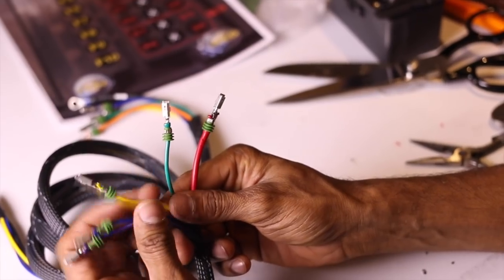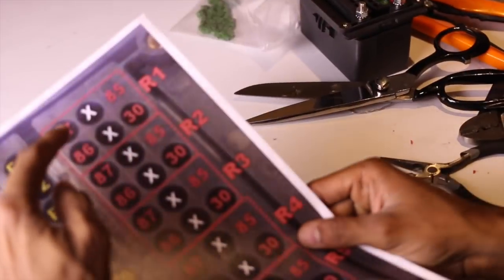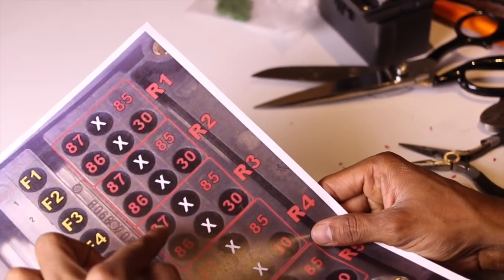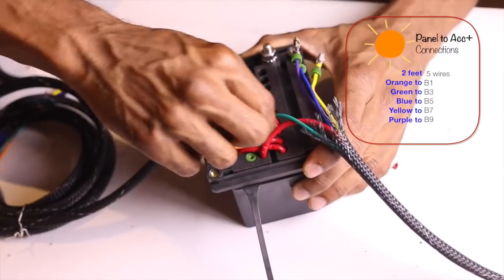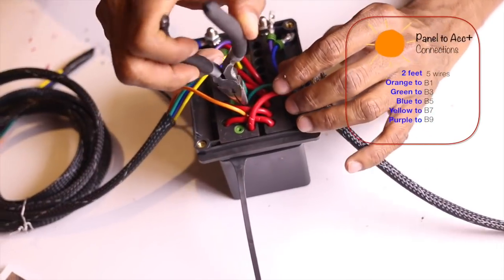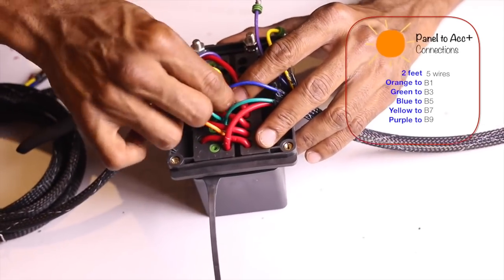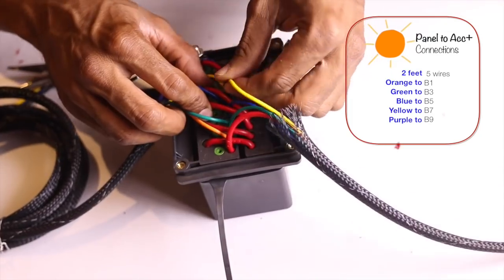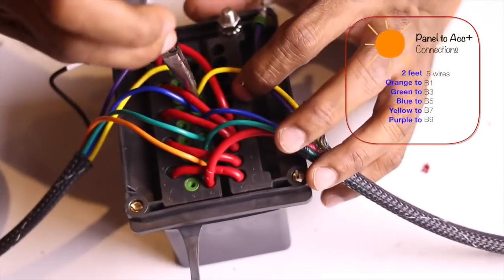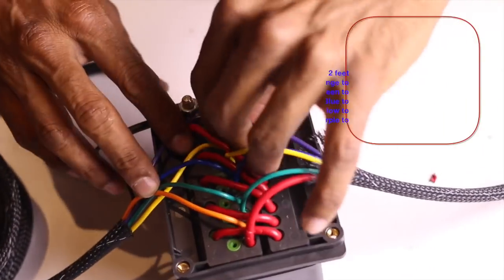Now take the second set of wire which was the two feet long. These are the connections between the relay panel to the accessories. Now start installing into b1, b3, then b5, b7, and b9 according to the color combinations.